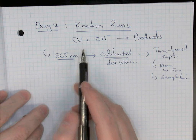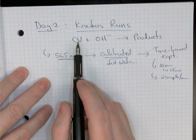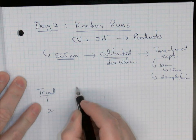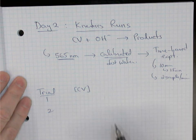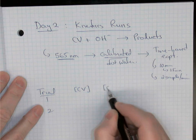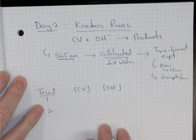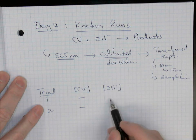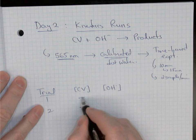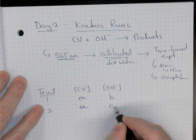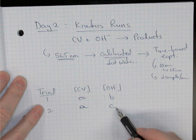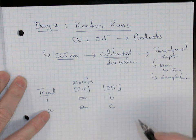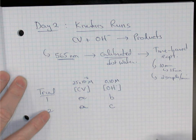You and your partner needed to decide on two different trials. In both trials, we keep the concentration of crystal violet constant and change the concentration of hydroxide. The stock solution of crystal violet was 25 × 10⁻⁶ M, and the hydroxide concentration was much higher at 0.1 M. You and your partner decided on the volumes to use, keeping total volume around 10 to 30 mL — enough to rinse and fill the cuvette once mixed.